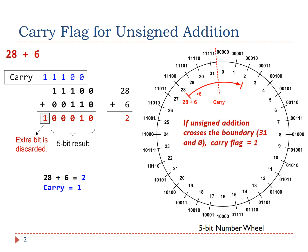We can use the number wheel to explain the carry. Numbers can be added or subtracted by moving around the number wheel — clockwise for addition and counterclockwise for subtraction. In this 5-bit example, carry occurs when a transition is made from 31 to 0. In other words, if unsigned addition crosses the boundary between 31 and 0, the carry flag is set to 1.